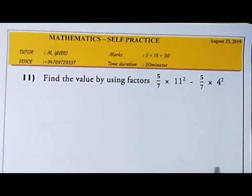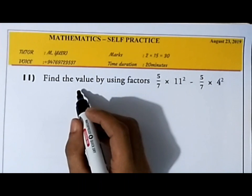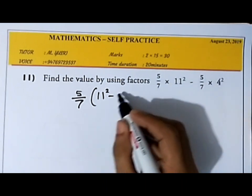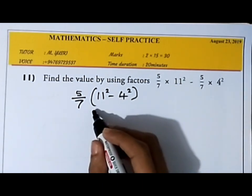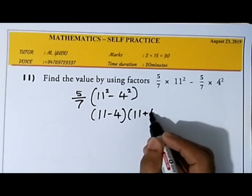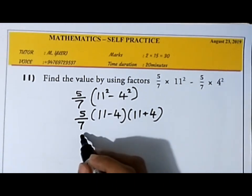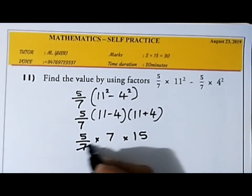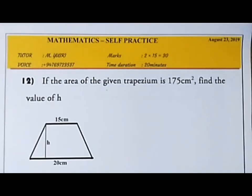Find the value using factors. The common factor is 5/7, so factor that out. On the left side 11² remains and on the right side 4² remains — this is a difference of two squares. Factorize as (11 − 4)(11 + 4): 11 − 4 = 7 and 11 + 4 = 15. Cancel 7 with 7, leaving 5/7 × 15 × 5 = 75.